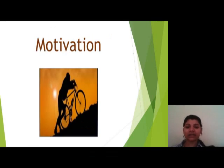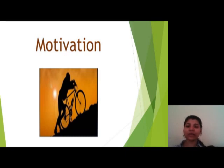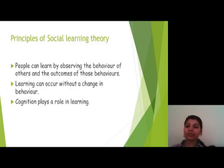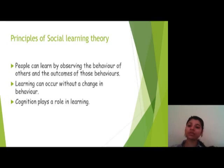Next is motivation. The decision to reproduce or refrain from reproducing an observed behavior is dependent on the motivation and expectations of the observer, including anticipated consequences and internal standards. Bandura's description of motivation is fundamentally based on environmental and social factors, since motivational factors are driven by the functional value of different behaviors in a given moment. There are three principles of social learning theory: people can learn by observing the behaviors of others and the outcomes of those behaviors; learning can occur without a change in behavior; and cognition plays a role in learning.